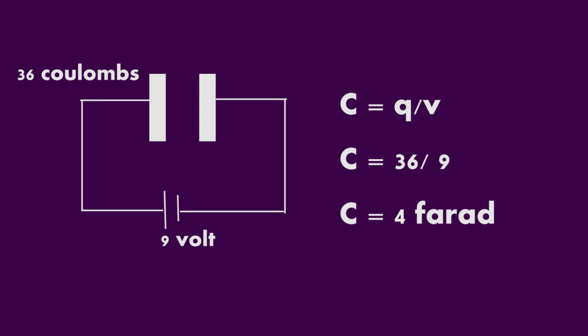Here we have a capacitor attached with a battery which is providing 9 volts of potential difference. The charge on the capacitor is equal to 36 coulombs.